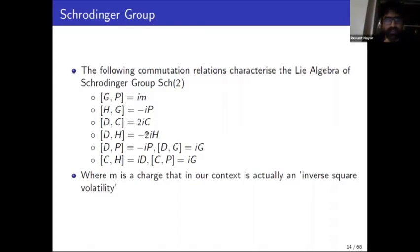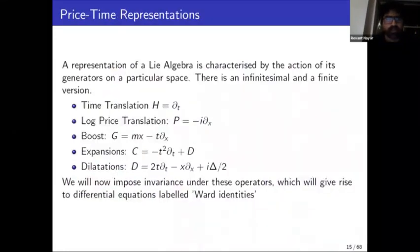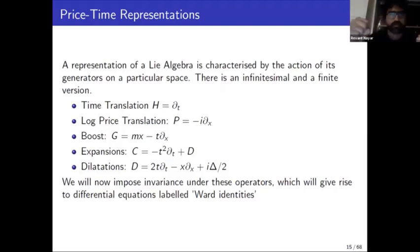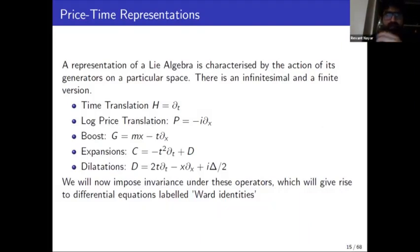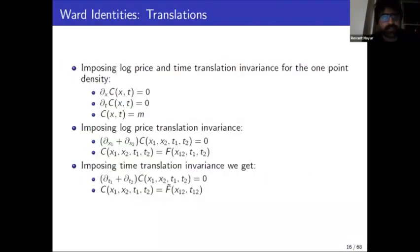These symbols are essentially the generators of the Lie group, and these are the commutation relations which tell you how they fail to commute with each other. Just using this, we get tremendous leverage. We write down representations showing what these generators do to price and time: H shifts time, P shifts price, G rotates the price and time axes with respect to each other, and C and D are dilations — zooming in and zooming out of your price process.